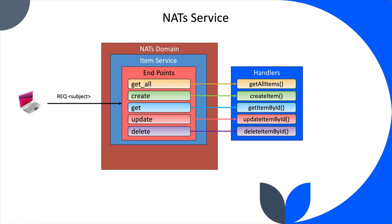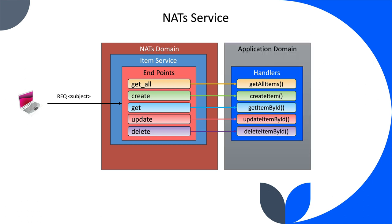Previously with Fiber, we created a Go application and Fiber was just a package within it. Now there's a separation: our endpoints live in NATS. A client makes a request to NATS, and NATS forwards it to our application where the logic lives. If you want to add a book service with endpoints for searching books and so on, you can create a completely separate application — never touching the first one — and clients don't see any difference.